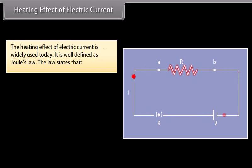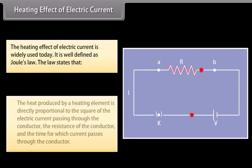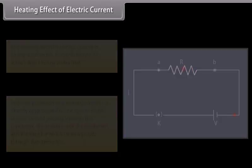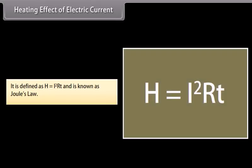Did you know? Overcoming this resistance produces heat. The heat produced by a heating element is directly proportional to the square of the electric current passing through the conductor, the resistance of the conductor, and the time for which current passes through the conductor. It is defined as H = I²RT, and is known as Joule's Law.